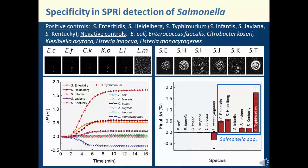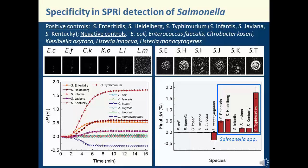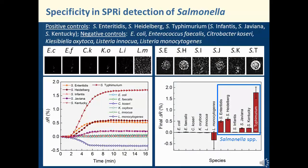The specificity of an SPRI assay relies largely on the ligand itself. With proper blocking, SPRI provides excellent specificity against non-target species. We tested 6 non-Salmonella species and none of them gave false positive signal. Most Salmonella serotypes could be easily detected, as seen in their positive final reflectivity variations. Since the antibody was selected using 3 Salmonella serotypes — Enteriditis, Heidelberg, and Typhimurium — it had higher affinity towards these 3 serotypes and weaker responses against other serotypes.